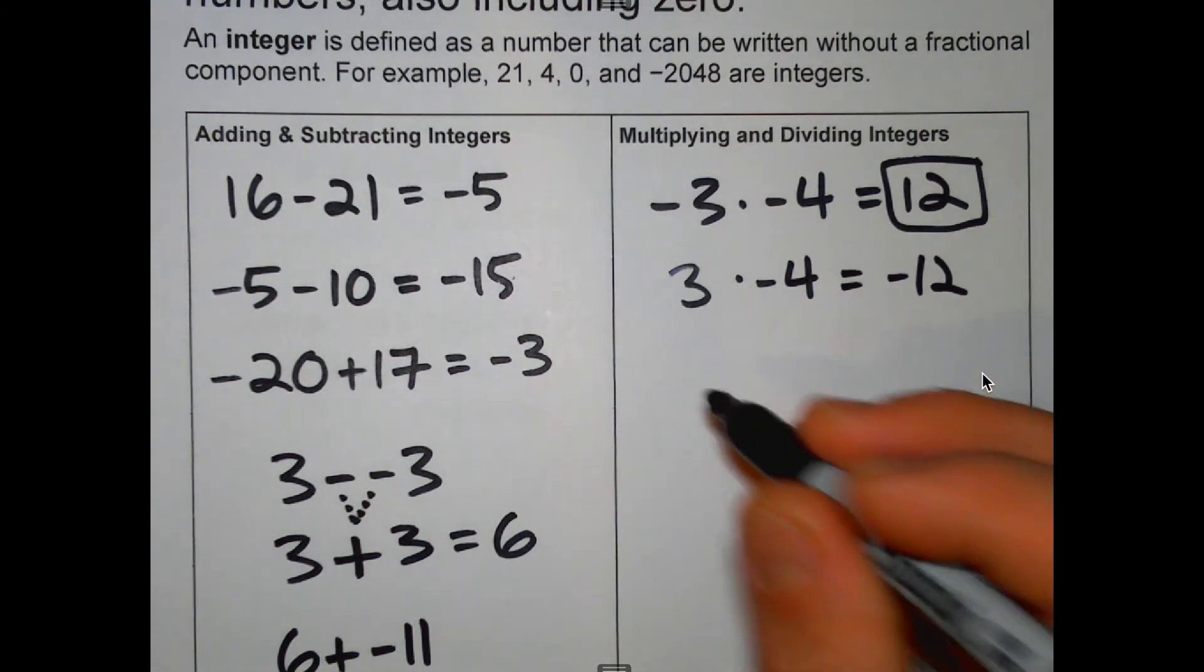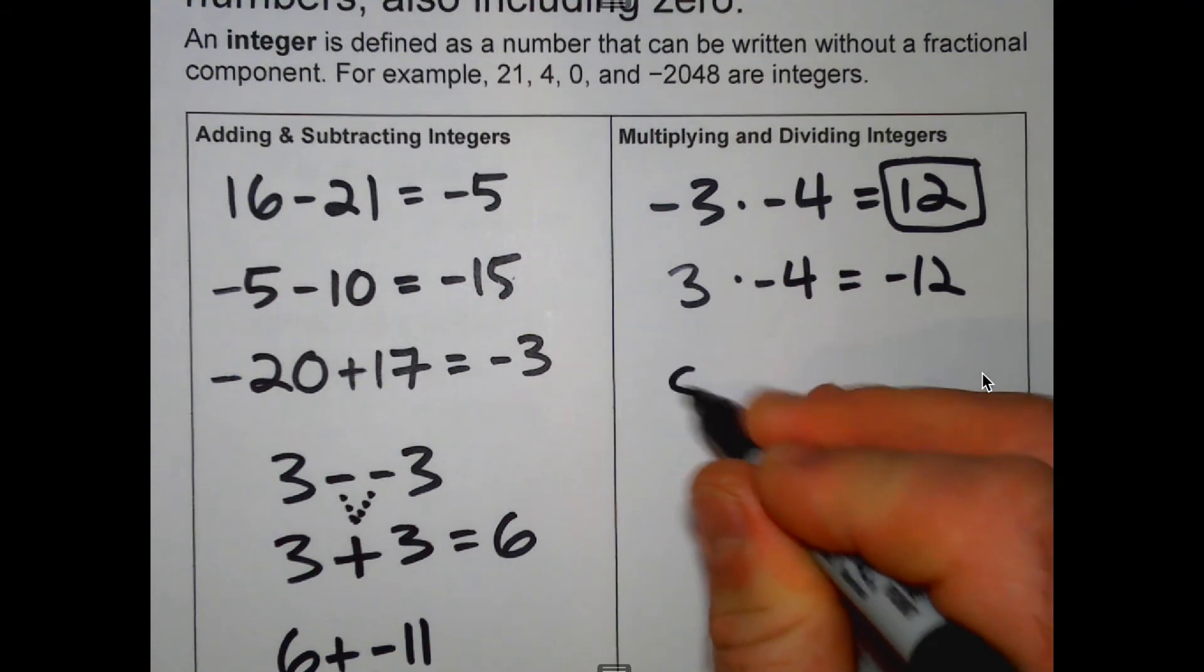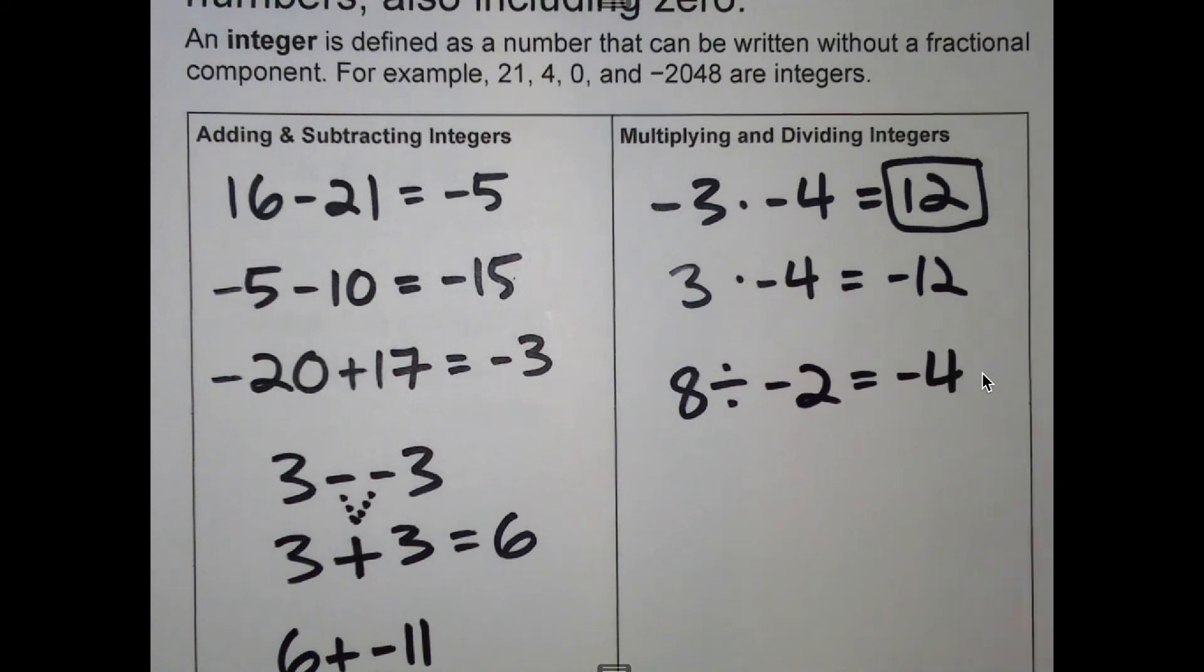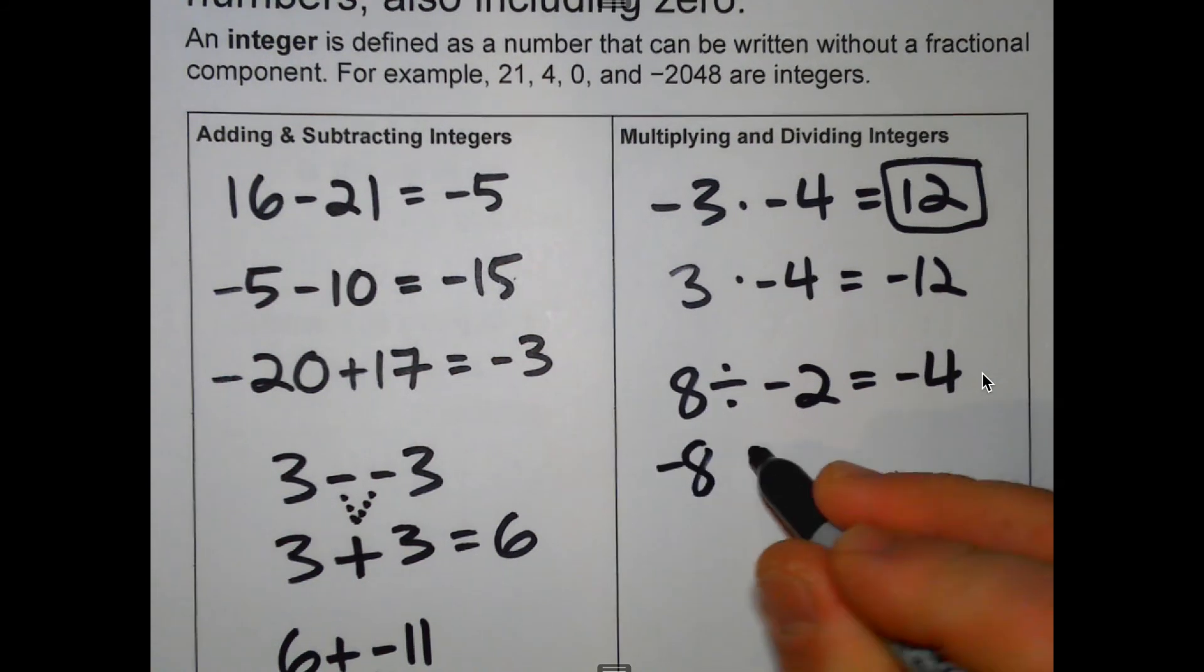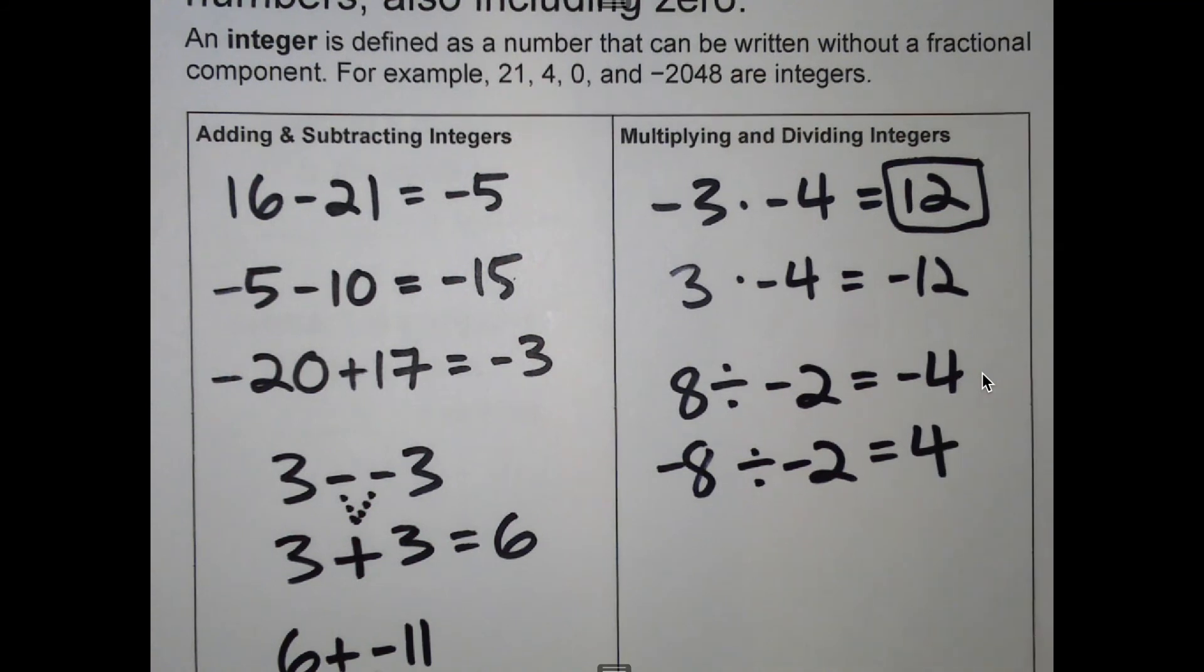It also works for division. Same rules for multiplying are also for division. 8 divided by negative 2 would equal negative 4. And negative 8 divided by negative 2, you have two negatives, you get a positive.